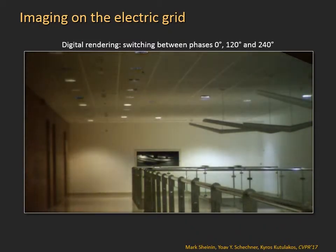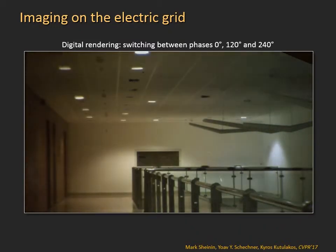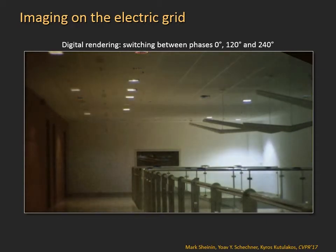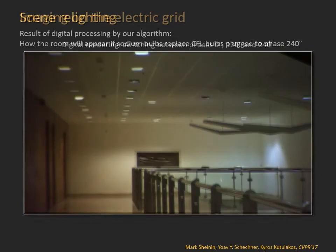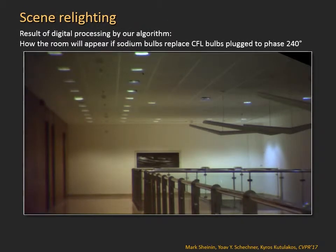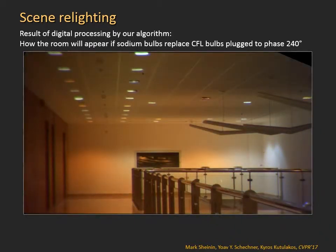Let's switch between the sources again to observe the different illumination components. Once we have these components, we can digitally recompose the scene as if some bulbs are exchanged for others that had not been present when the photos were taken. For example, here we show how the room would appear if bulbs connected to phase 240 are replaced by sodium bulbs.